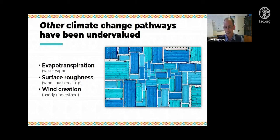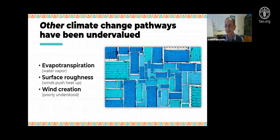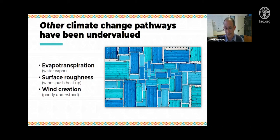A second way besides evapotranspiration is surface roughness. When winds hit up against a forest, it pushes the winds up toward the air, and that actually pushes a lot of heat up into the sky with it. It's almost as important as evapotranspiration. All of this pushing of heat up into the sky when winds hit the forest is very important for local and regional climates. Finally, there are a number of scientists who believe in what's called a biotic pump — the idea that forests are pulling wind toward them. It's much more poorly understood and very controversial, but it's increasingly discussed in the scientific literature.